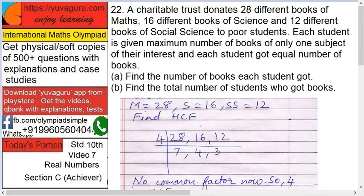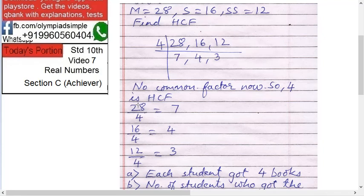To find the number of books each student got, first find the HCF of 28, 16, and 12. Dividing by 4 — is this divisible further? No. For all three to be divisible by a common factor, all three must share it. For example, if it were 8, 4, and 3, you can't go further because 8 and 4 are divisible but 3 is not. So, the HCF is 4.